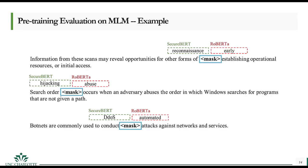Here are some examples of predicting masked words using SecureBERT. For example, the word reconnaissance is masked in the sentence: 'information from these scans may reveal opportunities for other forms of [MASK] words establishing operational resources or initial access.' SecureBERT correctly predicted this word, while RoBERTa Large predicted the masked word as 'early.' In other examples, words such as hijacking and DDoS are incorrectly predicted by RoBERTa Large, while SecureBERT correctly captured the semantic relationships and returned the correct words.